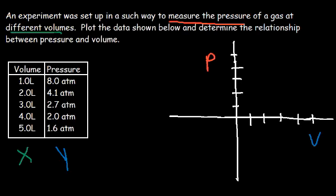On the y-axis, I'm going to go by 2, so this is going to be 10 ATM. And on the x-axis, I'm going to go by 1, so this is going to be 5 liters. The first point is at (1, 8), which is somewhere over here. The next point is (2, 4.1). Then (3, 2.7). Then (4, 2). And then (5, 1.6).